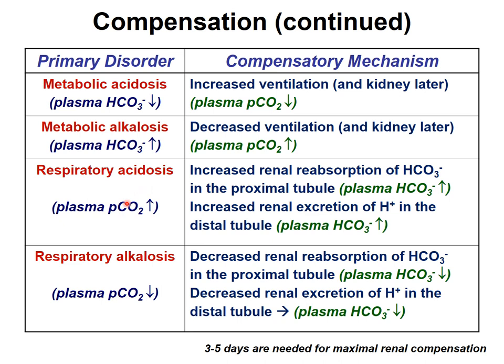In respiratory acidosis — PCO2 accumulation — the kidney slowly increases reabsorption of bicarbonate in the proximal tubule, then in the distal tubule excretes protons and further absorbs plasma bicarbonate. In respiratory alkalosis — hyperventilation — the kidney decreases bicarbonate reabsorption, losing bicarbonate and retaining protons in the body. This is how compensation occurs for each primary disorder.